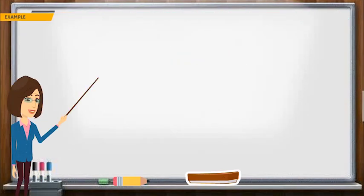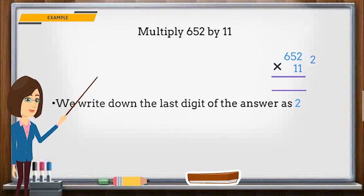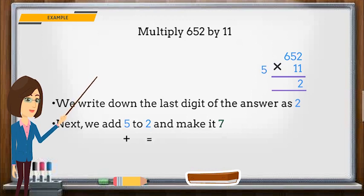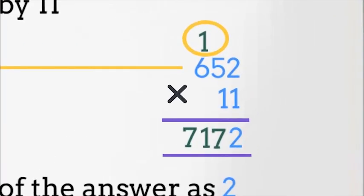Let's take one more example. Multiply 652 by 11. We write down the last digit as 2. Next we add 2 and 5 and write 7. Next we add 5 and 6 and make it 11, we write down 1 and carry over 1. Now add 6 and 1 and write 7. So the final answer is 7,172.